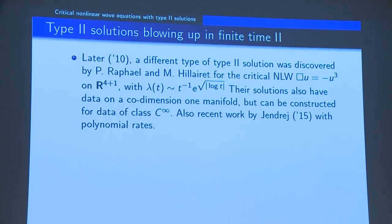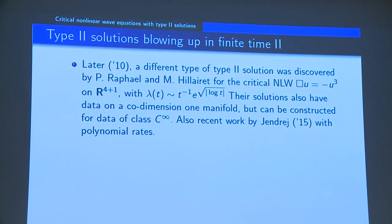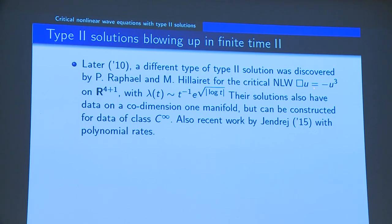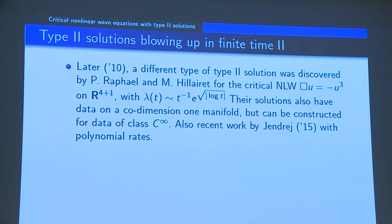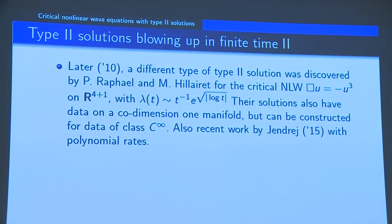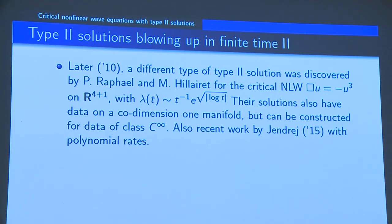Building such solutions is not very trivial. The next type 2 solution for a similar model was constructed three years later by Raphaël and Hillaire for the critical nonlinear wave in 4+1 dimensions. They have a very different scaling law: λ(t) = t^{-1} times e^{√(log t)}. This expression is faster than any power of the logarithm but slower than any power of t — strictly in between t^{-1} and t^{-1-ν}.